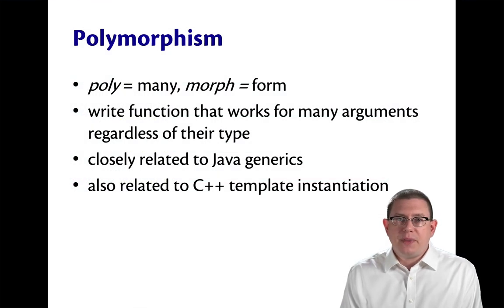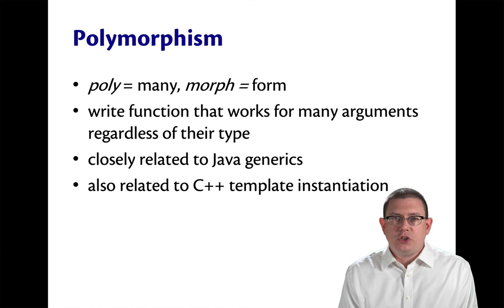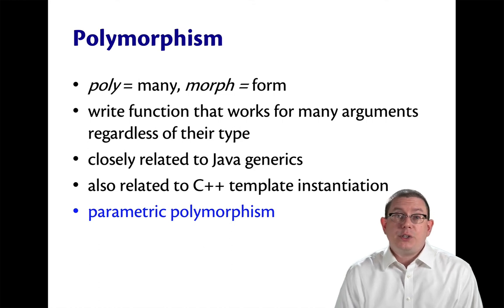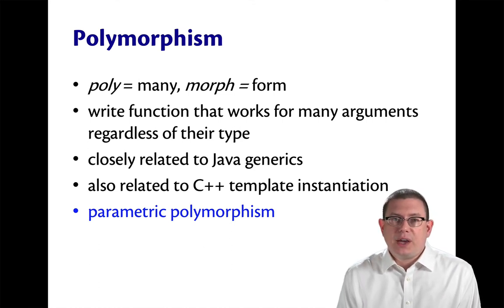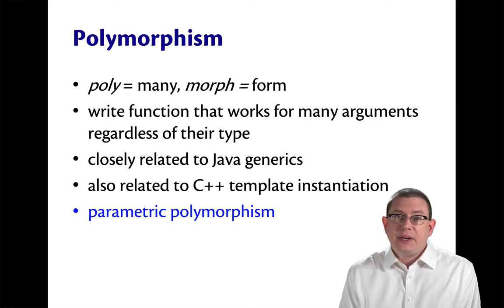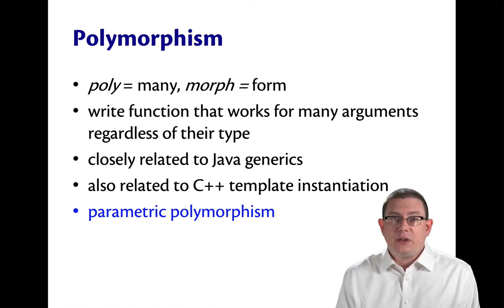This is a kind of polymorphism that is closely related to what you've seen in Java with generics. It's also somewhat related to C++ template instantiation. It's known as parametric polymorphism. It's a way of having a piece of code that can behave in many ways depending on the kind of parameters that are in use.